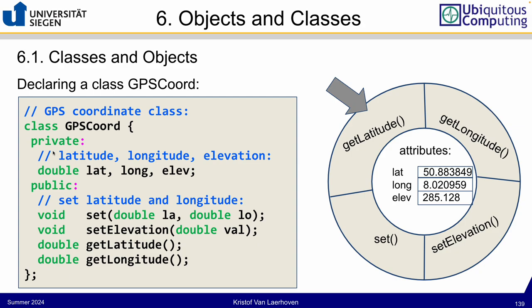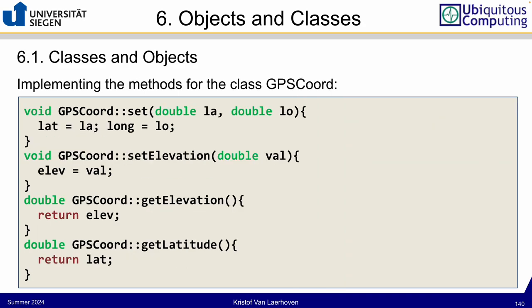'Public' means everything following that keyword can be used when instantiating an object of this class. 'Private' means it exists inside the class but objects can't access it from outside. So if you have a GPS coordinates object, you can't do 'here.lat' to get or set its value — you can't access those variables directly. The only code that can read or change private variables is the code inside the class methods. These are really important basic concepts, but they do make sense, and once you use them they'll come easily.